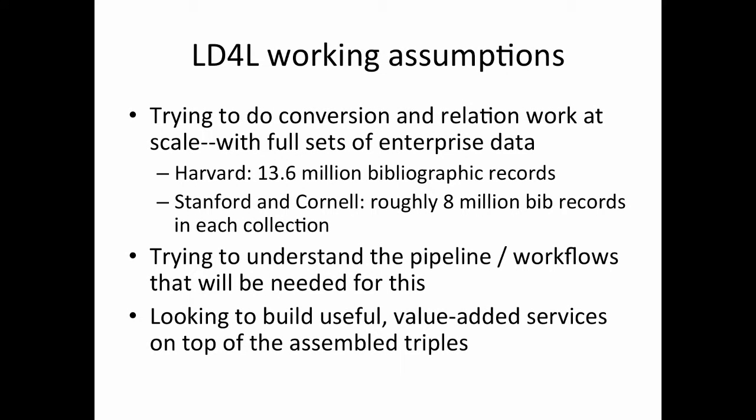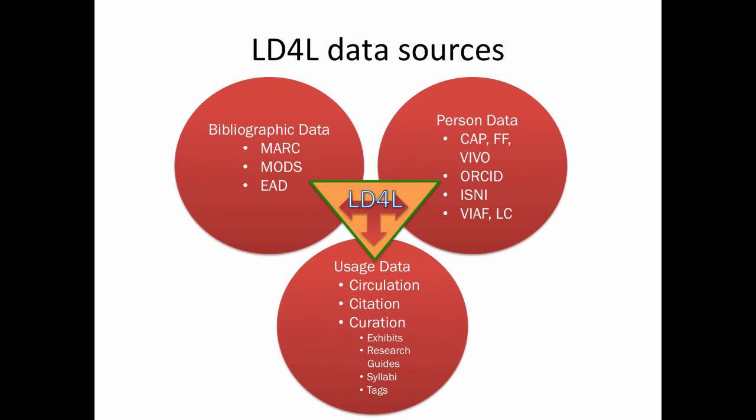Our working assumptions: we are trying to do this conversion and relations work at scale, with about 13.6 million catalog records from Harvard and roughly 8 million BIB records from each of Stanford and Cornell. When you translate this into linked data triples, it turns out it's in the billions — it's a lot. We're trying to understand the pipelines and workflows we'll need to do this, and looking to build useful value-added services on top of the assembled triples, though we're not doing a lot of that in this first version.